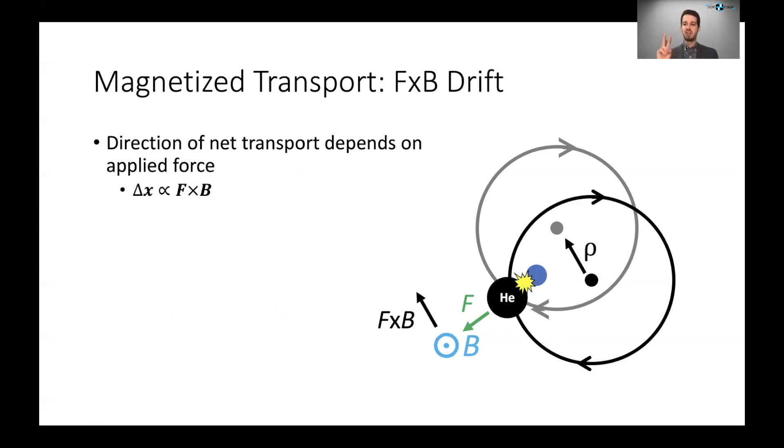So there's two other important things to note about magnetized transport in order to understand our results. First, the direction of the net transport that you have depends on the direction of the applied force, but in a non-trivial way. So I'll say I have this helium ion and it collides with this background fuel ion. So looking at this picture you can see that the net force on the helium ion is in this sort of downward direction indicated by the screen arrow, downward and to the left.